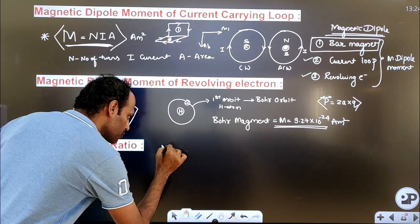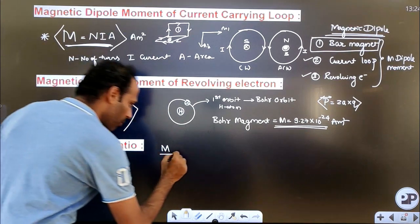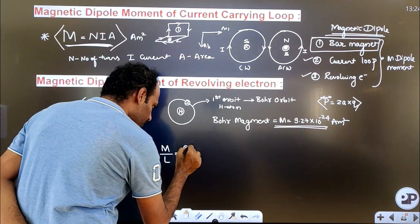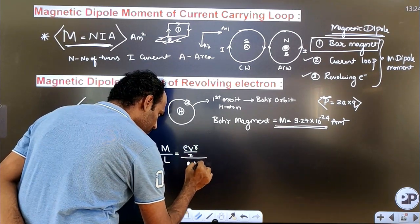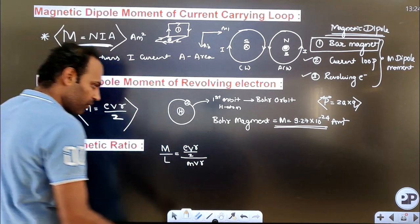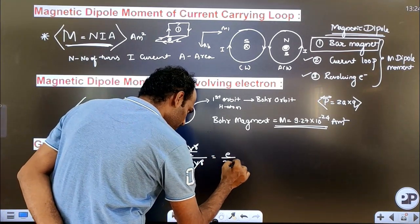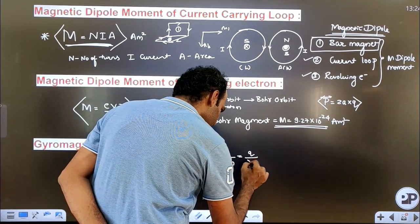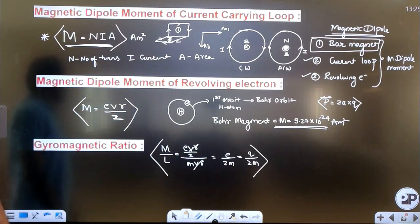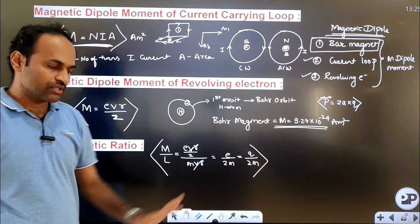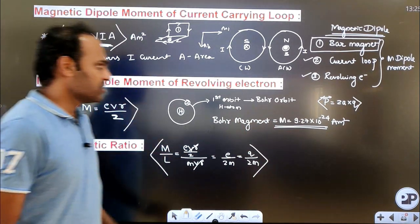The gyromagnetic ratio is the ratio of magnetic moment to angular momentum. The magnetic moment of the electron divided by the angular momentum gives e divided by 2m — that is, the charge of the electron divided by twice the mass of the electron. By substituting the charge and mass of the electron and simplifying, you will get the numerical value of the gyromagnetic ratio.